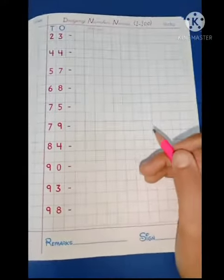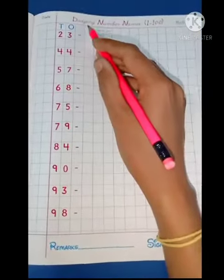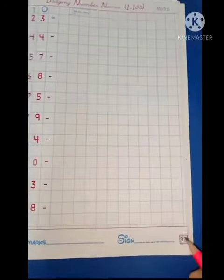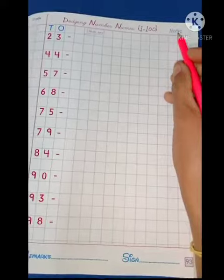Hello students, now we will learn writing number names 1 to 100 on page number 93. Subject is maths, okay.